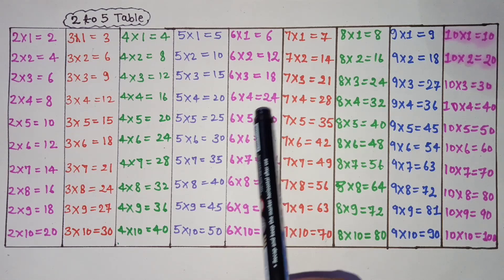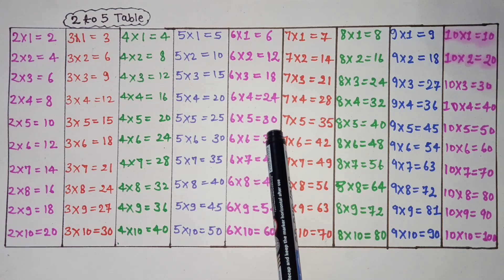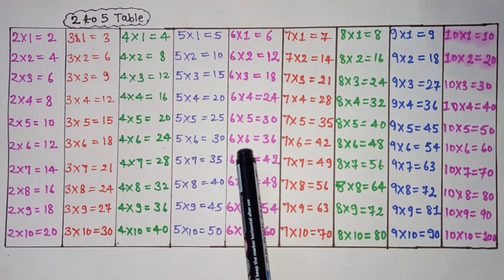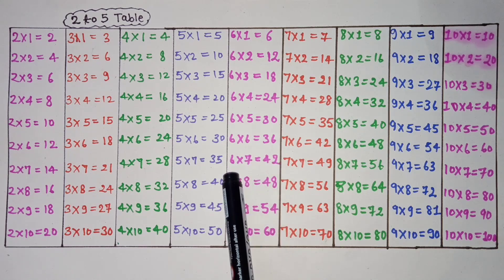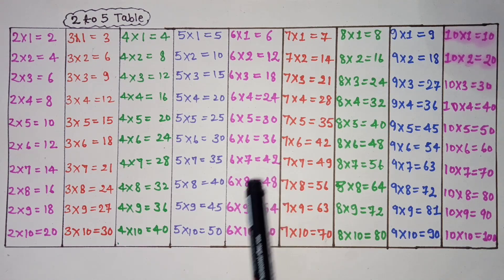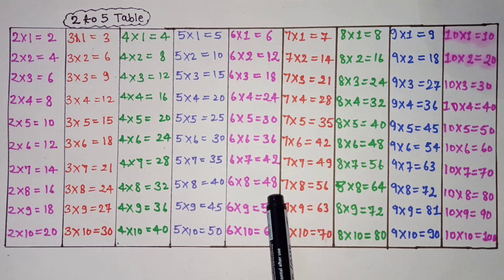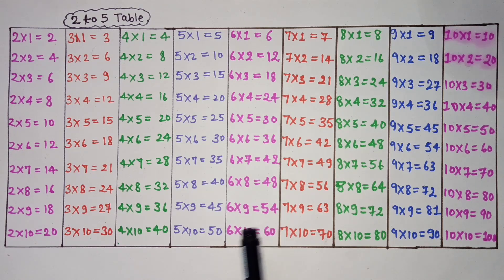6 1 is 6, 6 2 is 12, 6 3 is 18, 6 4 is 24, 6 5 is 30, 6 6 is 36, 6 7 is 42, 6 8 is 48, 6 9 is 54, 6 10 is 60.